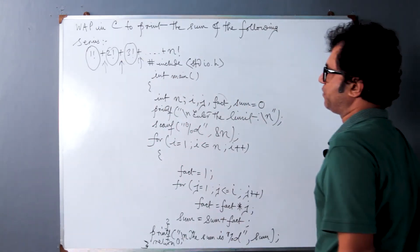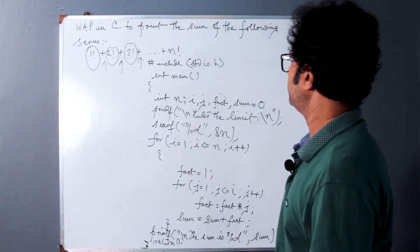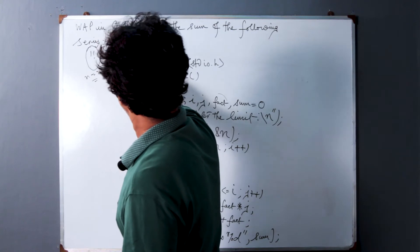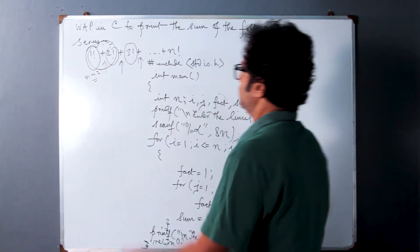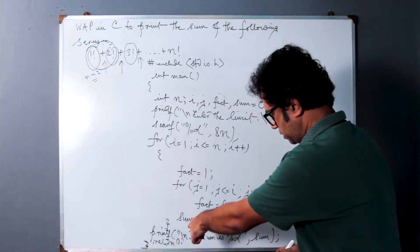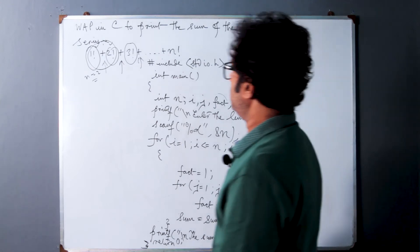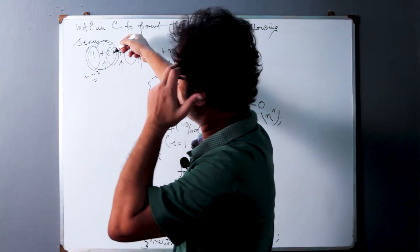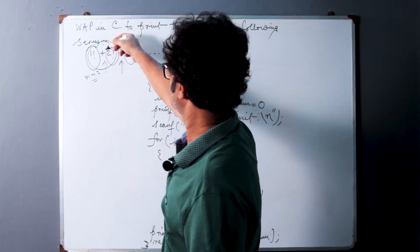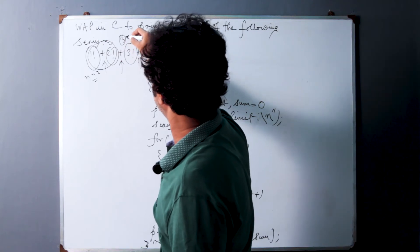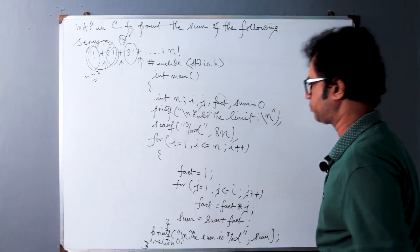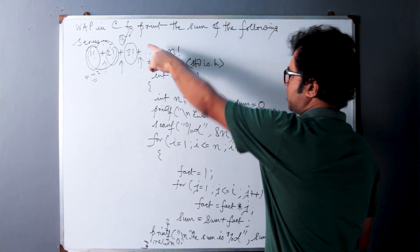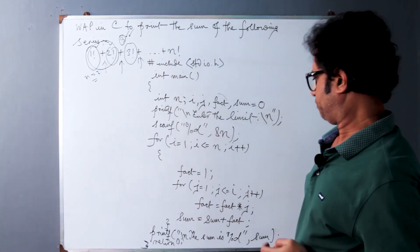Let us put some sample values in order to make you understand what is happening. For the sake of simplicity, let us take n equal to 2. We are going to calculate these two portions to see whether our expected result tallies with the result from the program. 1 factorial is 1, 2 factorial is 2 into 1 that is 2, so 1 plus 2 equals 3. The expected result is 3. Let us get started with the dry run process to check if this tallies.